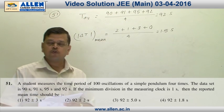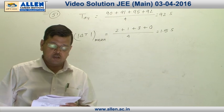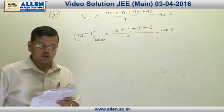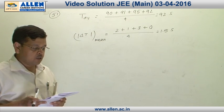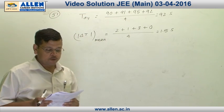Question number 51 is based on errors in measurement topic. In this question, it is given that a student measures the time period of 100 oscillations of a simple pendulum four times and gets data of 90 second, 91 second, 95 second, 92 second.